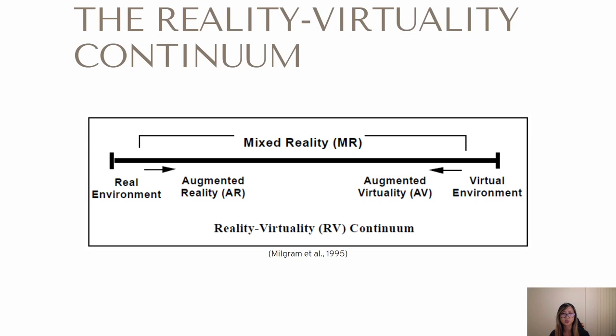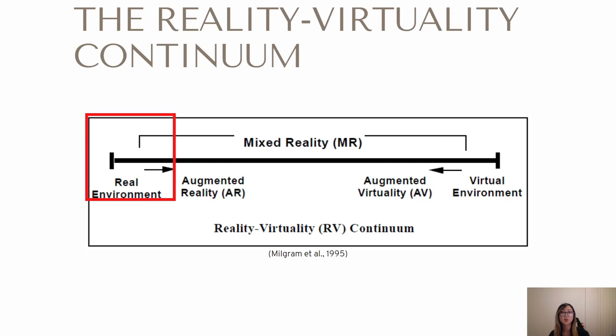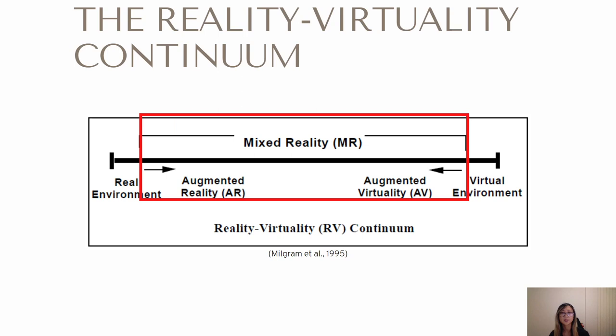As a bit of background regarding augmented reality, we first must look into the reality-virtuality continuum. This concept was proposed in 1995. Essentially, one end of the spectrum is the virtual environment, which represents a completely synthetic environment. The opposite end represents a completely real environment. Between these two ends is mixed reality, or MR, in which both virtual and real elements are present within the same display to the user. Within MR, AR sits closer to the real environment's end of the continuum, while augmented virtuality, or AV, resides closer to the virtual environment.